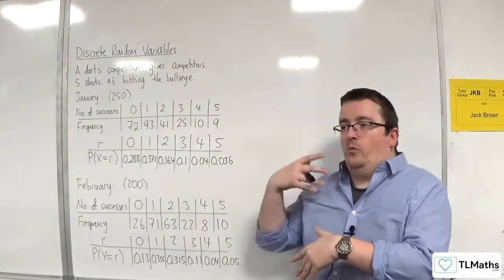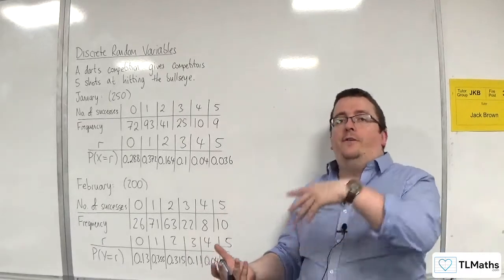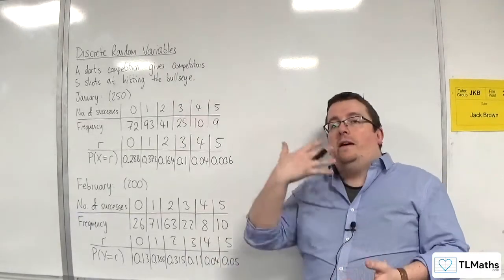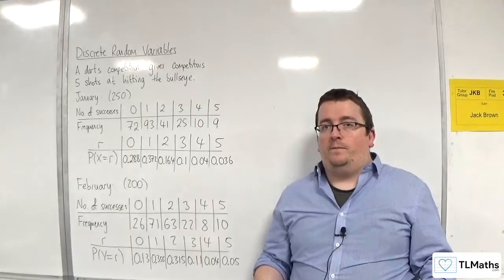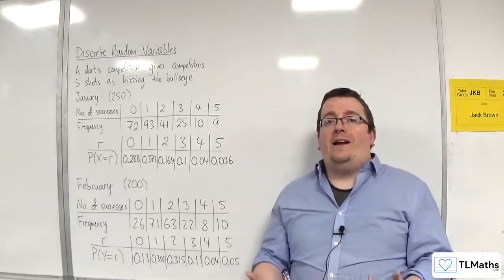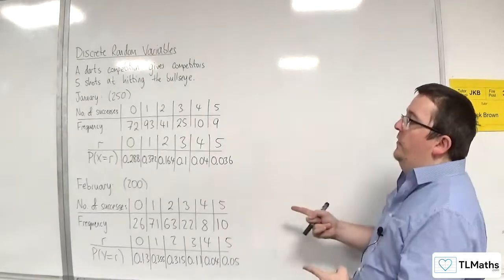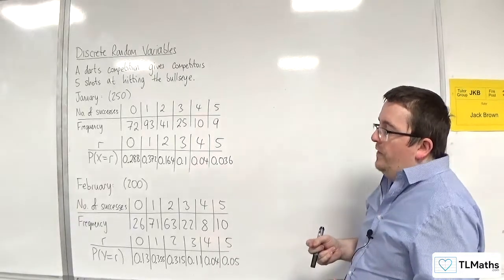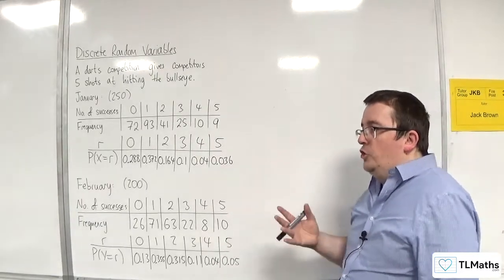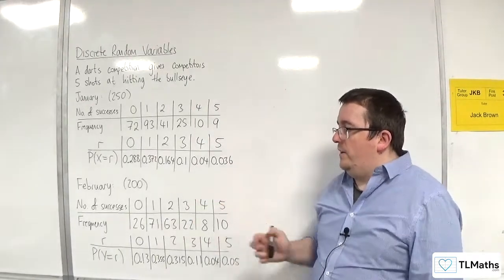What we're going to work with are E of X and VAR of X—the mean and the variance of the probability distribution. We're going to introduce how that is calculated in the next few videos. Then we're going to come back to this example where we'll actually compare January and February, and come to a conclusion about whether putting in that practice session before they tried it in February actually helped or not.